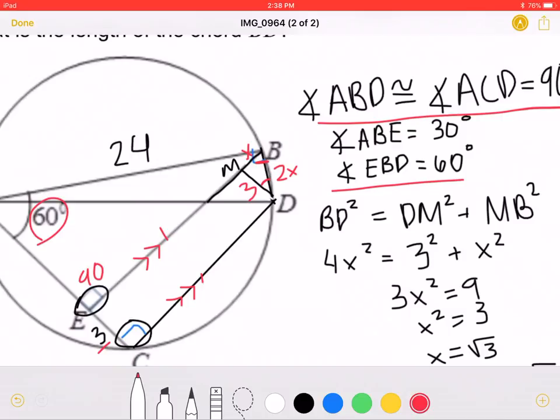Now, we can plug in our values to our equation. 2X squared, which is equal to 4X squared, is equal to 3 squared plus X squared. This means that 3X squared is equal to 9, and X squared is equal to 3. This gives us that X is equal to plus or minus square root of 3.